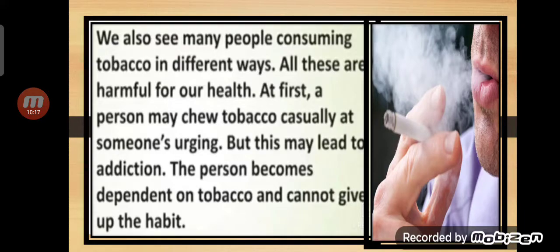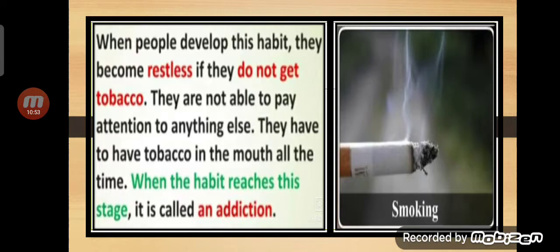Don't even try tobacco due to peer pressure. At first a person may chew it casually, but this may lead to addiction. Slowly, you might become an addict. The person becomes dependent on tobacco and cannot give up the habit. People say, 'I want to give up, I know it is a bad habit, but I can't.' Bad habits are very easy to learn but very difficult to remove. When people develop this habit, they become restless. If they don't get tobacco, they must have it — they cannot manage without it. They are not able to pay attention to anything else. When the habit reaches this stage, it is called an addiction.